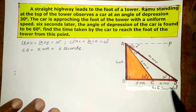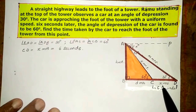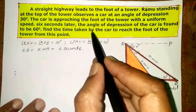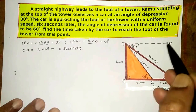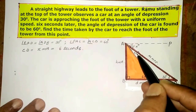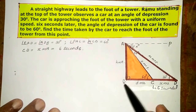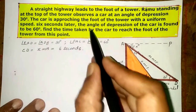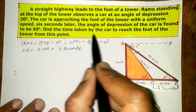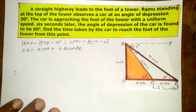From D to C, the time taken is 6 seconds, that distance being X meters. The angle of depression of the car is found to be 60 degrees — that is, angle PAC equals 60 degrees, which means angle ACB is also 60 degrees. We need to find the time taken by the car to reach the foot of the tower from this point.